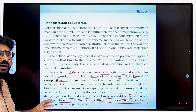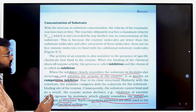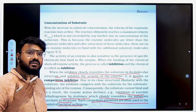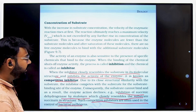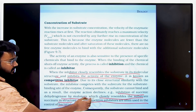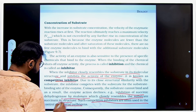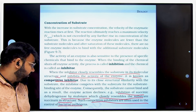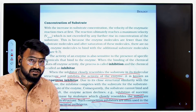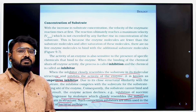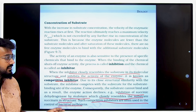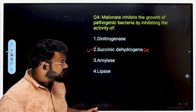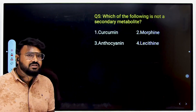In competitive inhibition, the inhibitor closely resembles the substrate in molecular structure and inhibits the enzyme's activity. The classic NCRT example is the inhibition of succinic dehydrogenase by malonate, which closely resembles the substrate succinate in structure. This type of competitive inhibition is used in controlling pathogenic bacteria, making succinic dehydrogenase the correct answer.